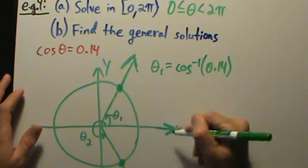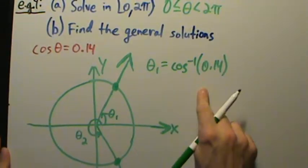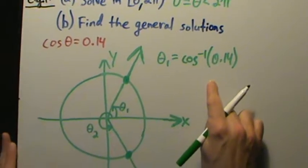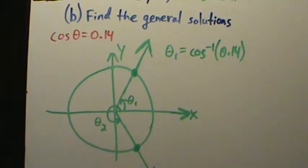So inverse cosine of 0.14, that is one of our answers. Okay, now we'll toss this into a calculator a little bit later, but before that, how do we get this theta sub 2? Well, this is where the symmetry properties come into play now.